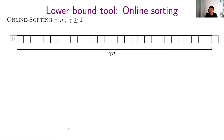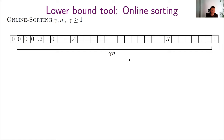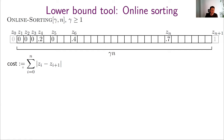The tool we use is a new problem we introduce called online sorting. The problem has a parameter gamma (at least 1). We have an array of size gamma times n, with a sentinel value 0 on one end and a sentinel value 1 on the other. One by one, we receive a number in the unit interval and must place it in our array. When done, we read the numbers left to right, and the cost is the sum of differences of consecutive numbers. The optimal solution is to put the numbers in sorted order, giving a cost of 1.